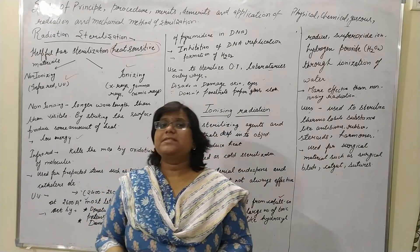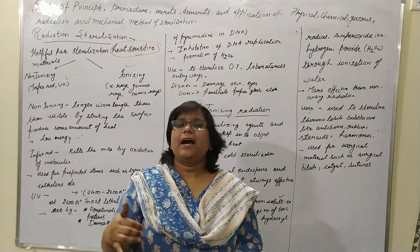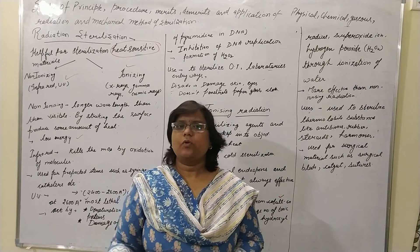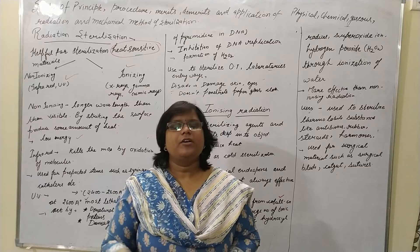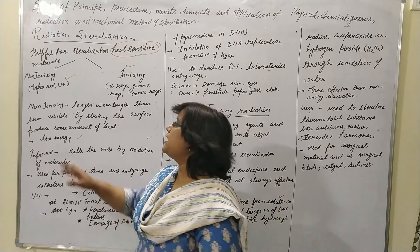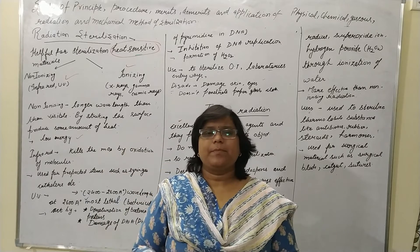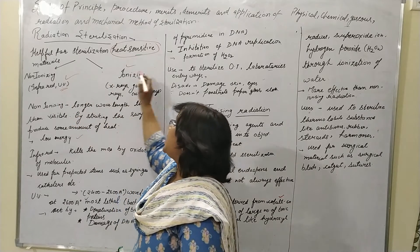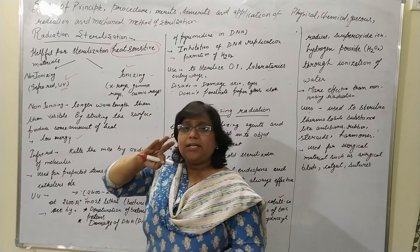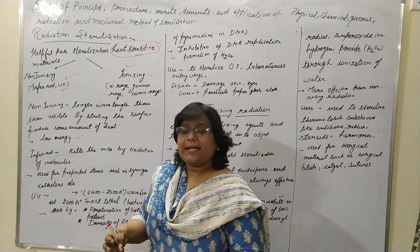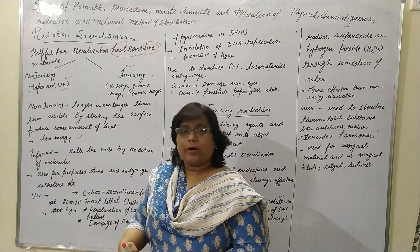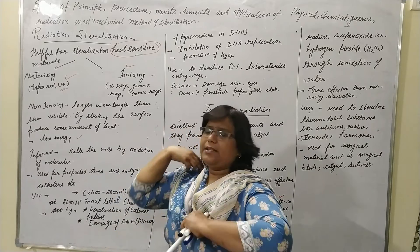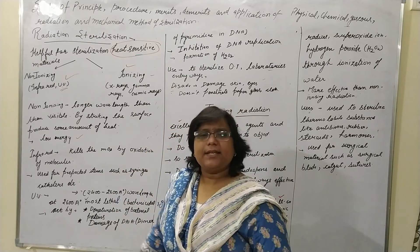But if it forms ions in the microbial system — like hydroxyl ion, superoxide ion, and other free radicals — those radiations come under the category of ionizing radiation. In non-ionizing radiation, the two main examples are infrared and ultraviolet rays. In ionizing radiation, the main three are X-ray, gamma ray, and cosmic rays.